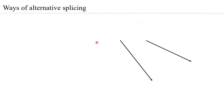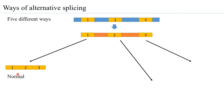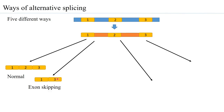There are five different ways of alternative splicing. Given a gene with exon 1, intron 1, exon 2, intron 2, and exon 3, normal splicing removes intron 1 and intron 2 completely to join exons 1, 2, and 3 through ester bonds. If exon 2 is skipped, only exons 1 and 3 form an ester bond — this is the second way, exon skipping.